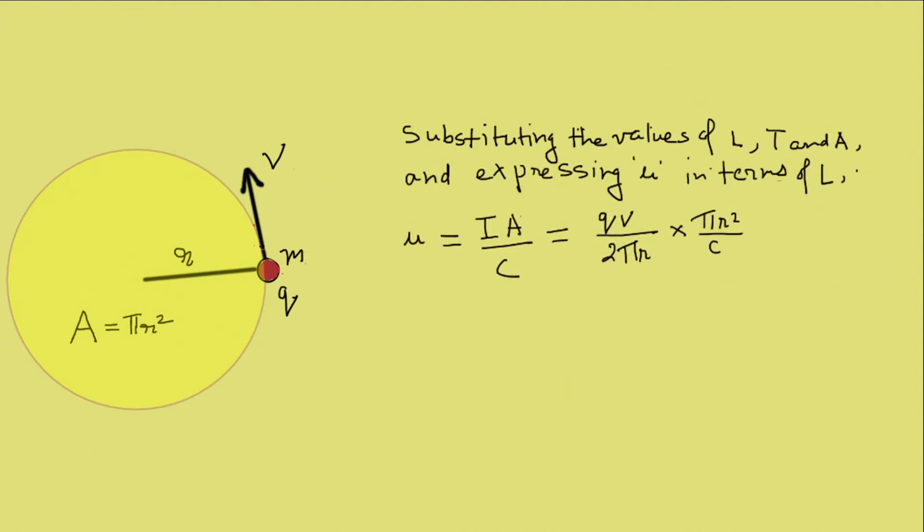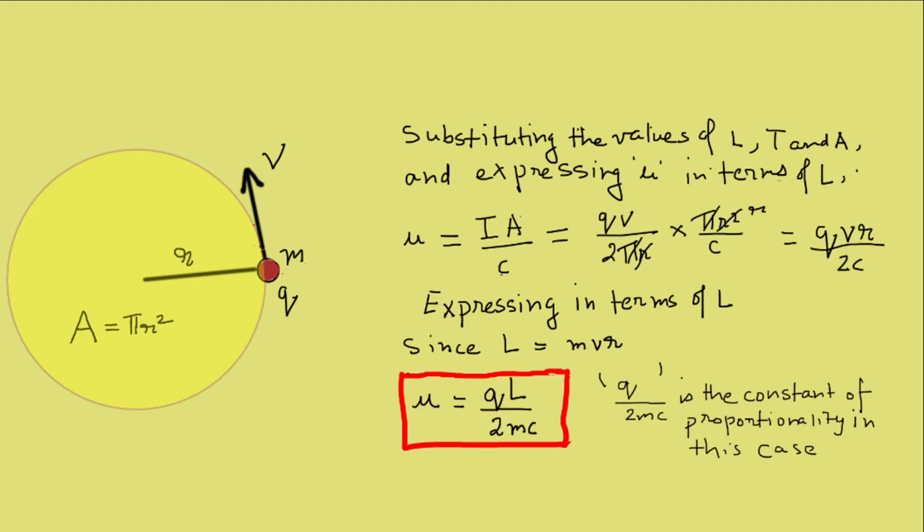Now substituting the values of i, t and a and expressing the magnetic moment in terms of the angular momentum, we get mu equals i into a by c which makes i qv by 2πr and a to be πr² divided by c. After simplifying, mu equals qvr by 2c. Since l is mvr, we finally get the relation mu equal to ql by 2mc.